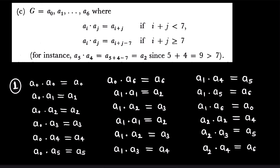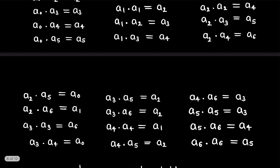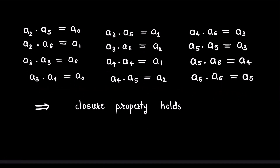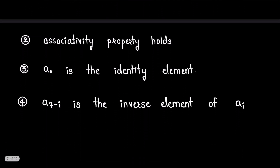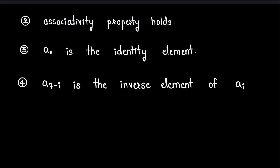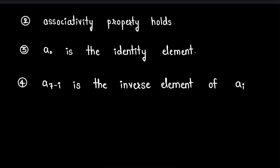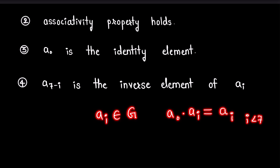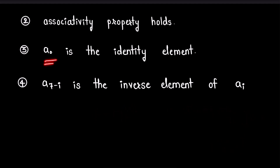You can pause the video and observe all the calculations. From these calculations we can conclude that closure property holds for the given set G with the given binary operation. Following similar calculations, you can check that associativity property also holds. Now, a-0 is the identity element because for any a-i in G, a-0 dot a-i equals a-i since i is always strictly less than 7 — the range of i is from 0 to 6 — therefore a-0 is the identity element.